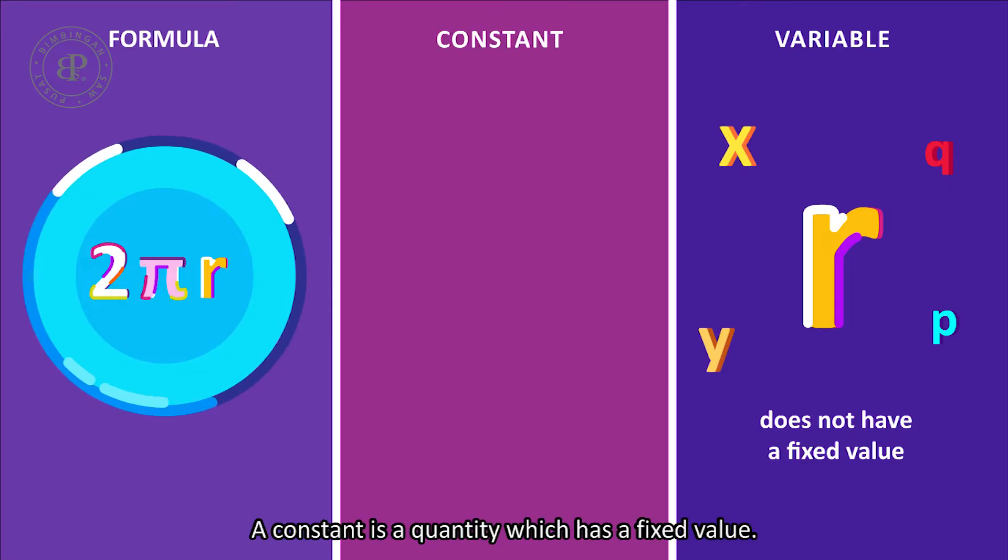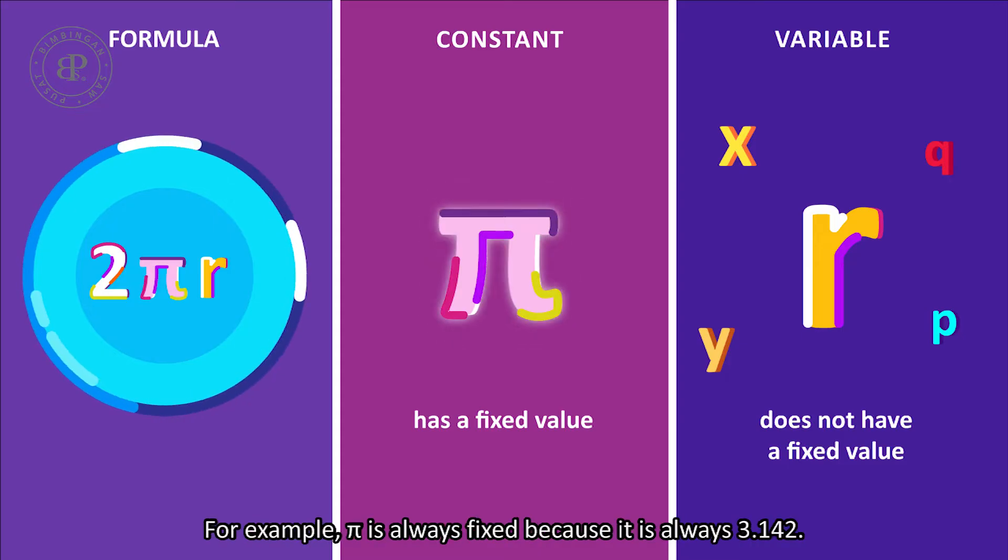A constant is a quantity which has a fixed value. For example, pi is always fixed because it is always 3.142.